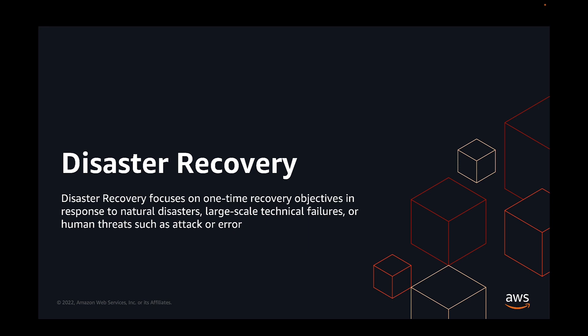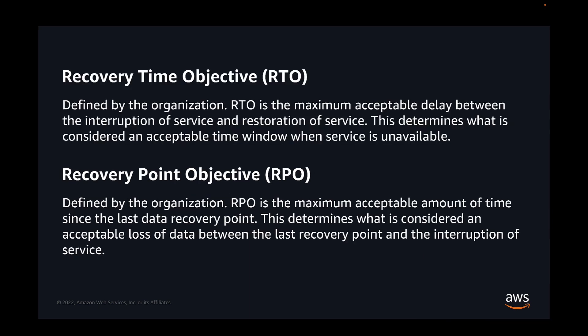Let's now get into our first topic of the Well-Architected Lens for Reliability, which is Disaster Recovery. Disaster Recovery focuses on one-time recovery objectives in response to natural disasters, large-scale technical failures or human threats such as an attack or an error. Having backups and redundant workload components in place is the start of your disaster recovery strategy. RTO and RPO are objectives for the restoration of your workload — set these based on your business needs. Implement a strategy considering locations and function of the workload resources and data, as well as the probability of disruption and cost of recovery.